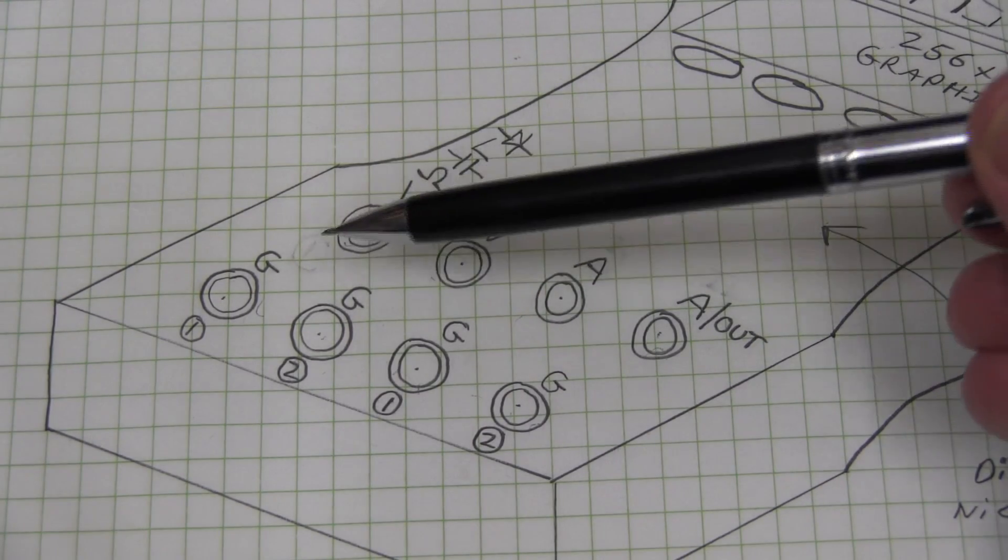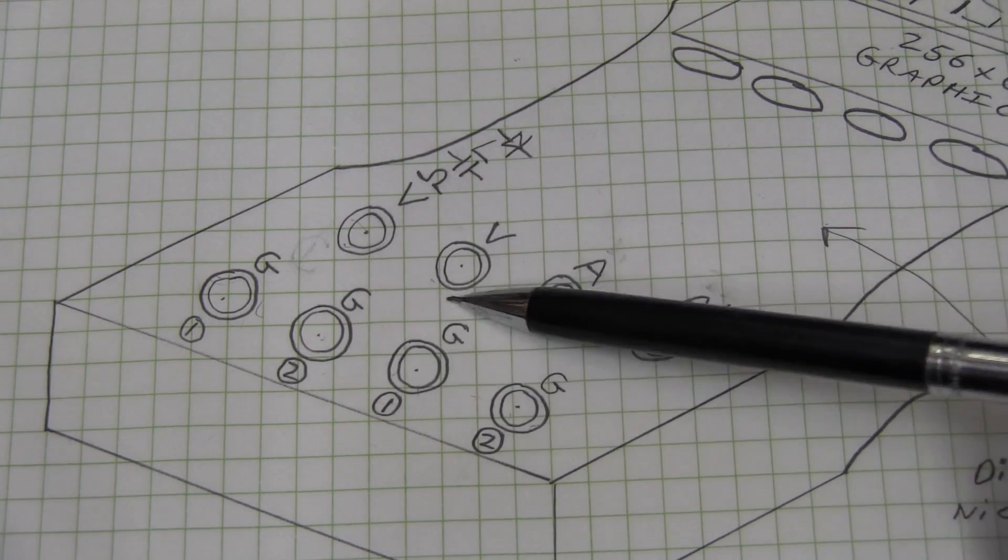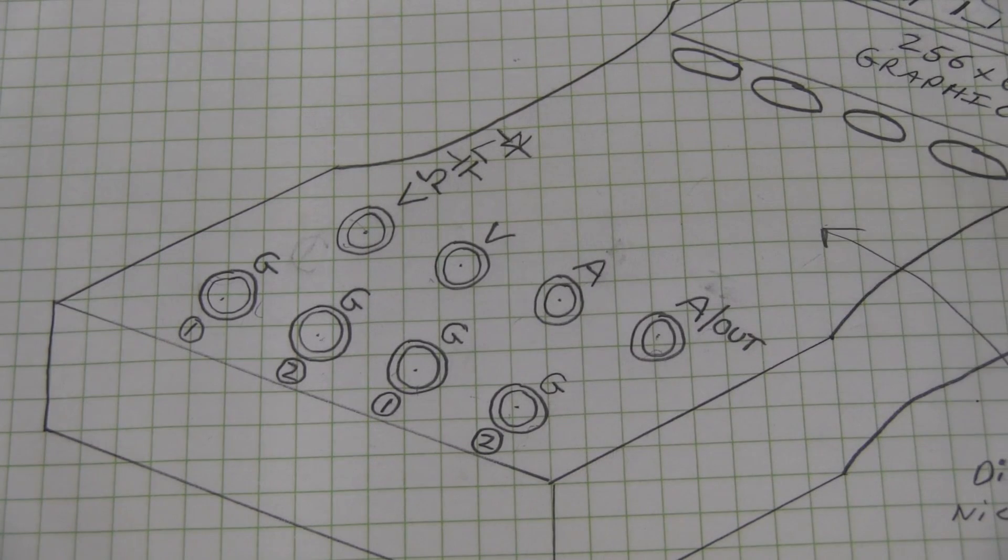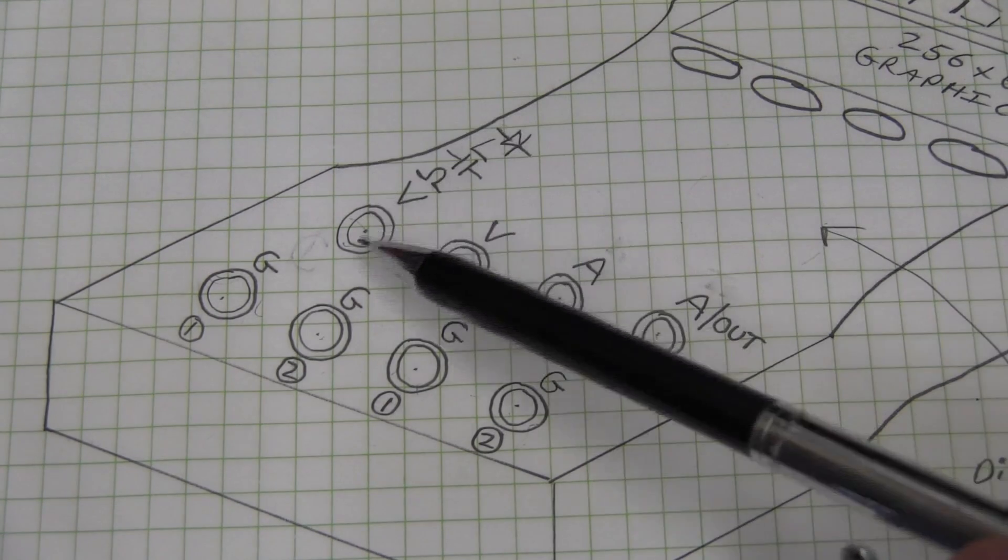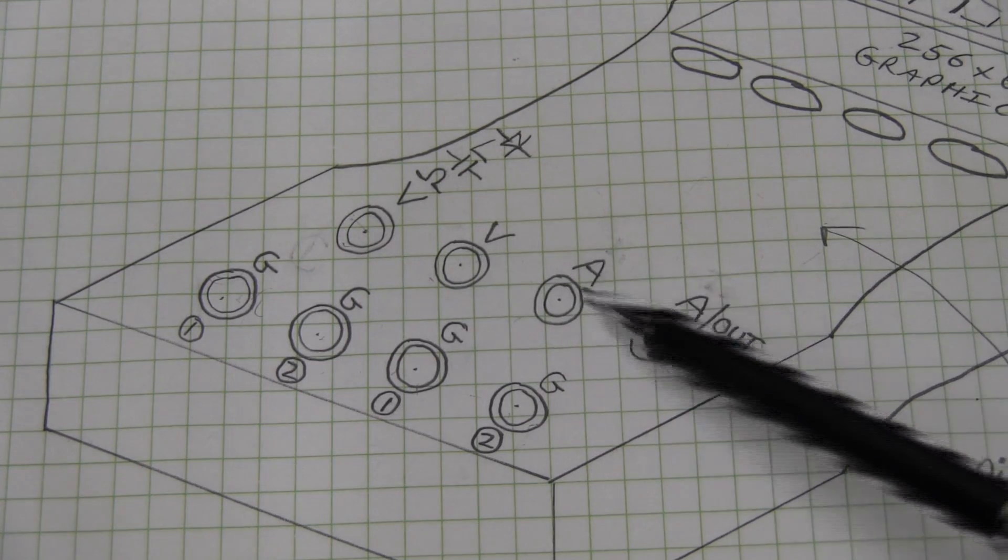Now, when I first came up with the idea, I thought, wouldn't it be great to have ground volts and amps like and then like have three or four channels of those. And then I thought, it's a bit overkill. So I sort of limited myself a little bit just to two voltage channels and two amps channels.